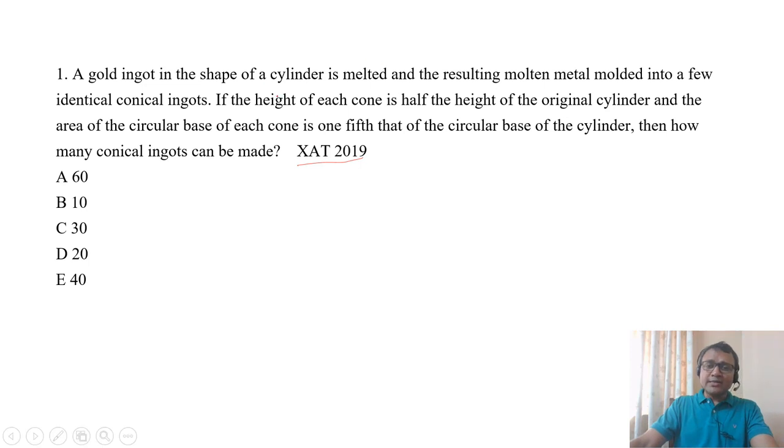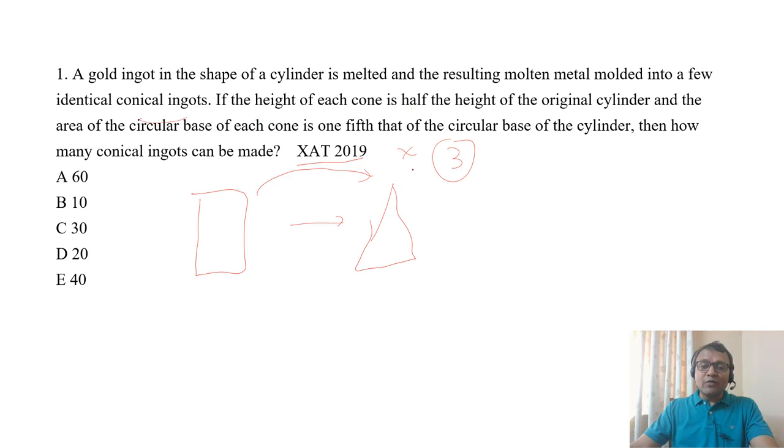If you look at this sum, it actually looks complicated but it's very simple. You can do it orally. A gold ingot in the shape of a cylinder is melted into conical ingots. If you convert a cylinder to a cone, the formula: cylinder is pi r² h, cone is 1/3 pi r² h. So one cylinder, you can make three cones.